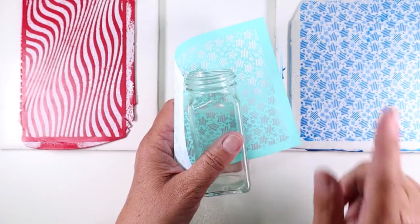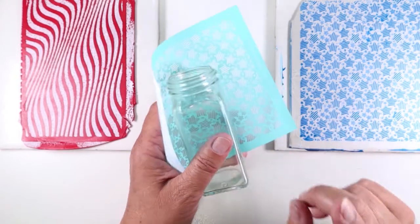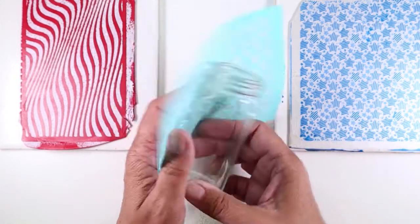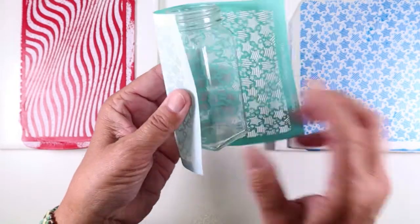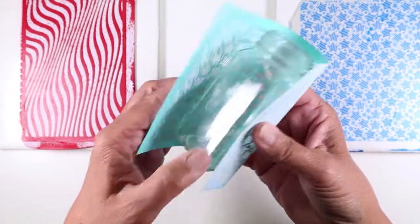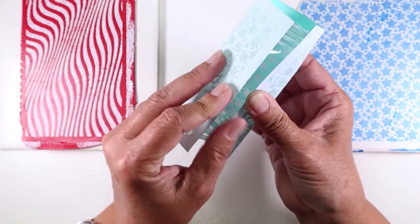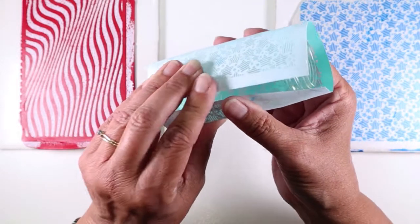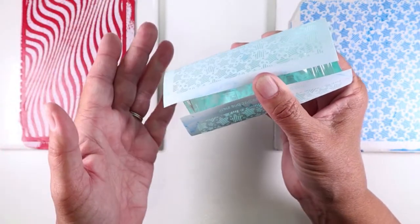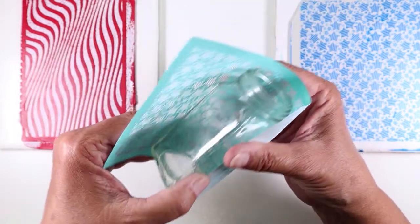My paint is dry but before we move on to using these there's an issue we need to address. You might notice that unless you have a very small jar there is an issue that neither of these decorated sheets are long enough to wrap completely around the bottle. Well what to do? I have a really cool hack for you.